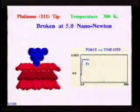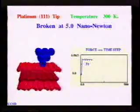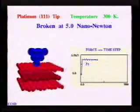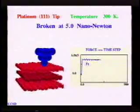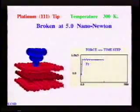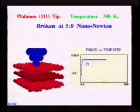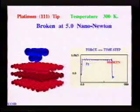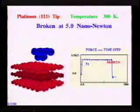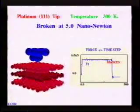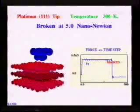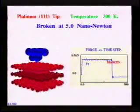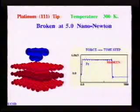The microscope operates by plotting the upward force of a probe, shown here in blue, as it scans across the surface of a solid sample. The single atom tip of the probe is very delicate. At the given experimental operating force, the probe tip may break, causing a step-like image.